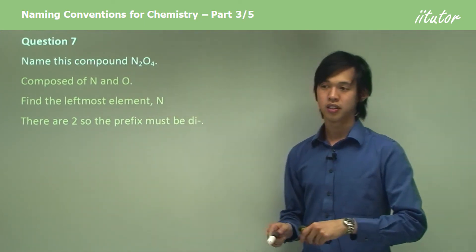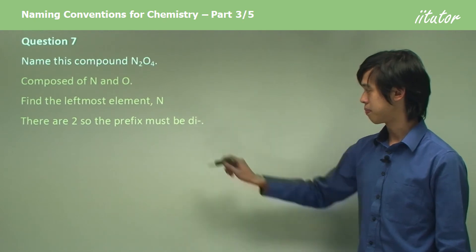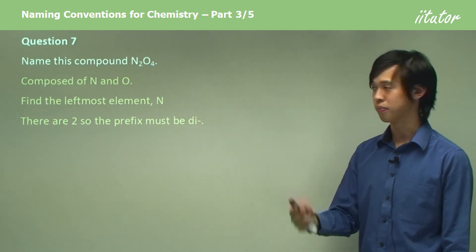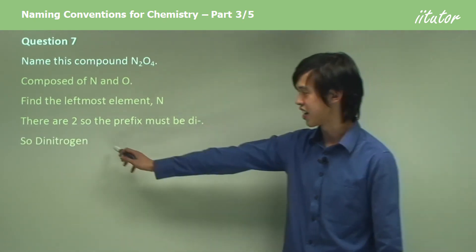So, we say di-nitrogen. Di is the prefix we use for two. So, we've got di-nitrogen here.